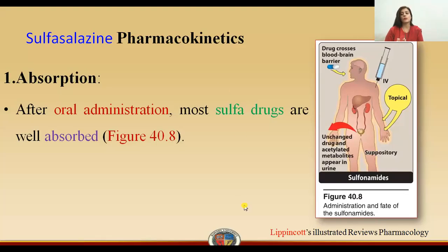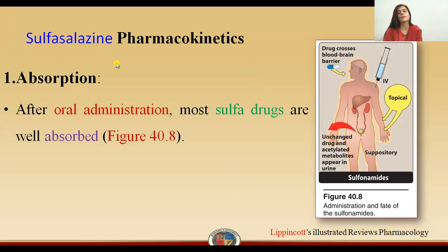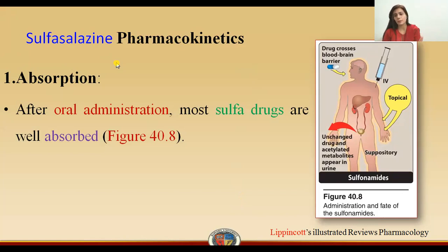Students, in this lecture we are going to discuss a drug that is sulfasalazine, which is basically a sulfonamide. We have already discussed the mode of action of the sulfonamides, and the mode of action of sulfasalazine is the same — it inhibits the dihydrofolate synthetase enzyme, resulting in no formation of dihydrofolic acid and consequently no formation of DNA, purines, or pyrimidines.